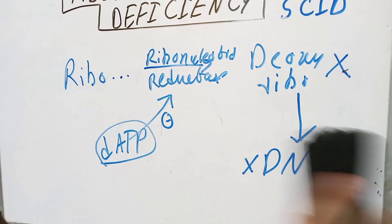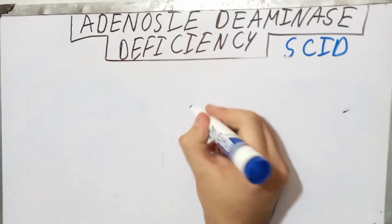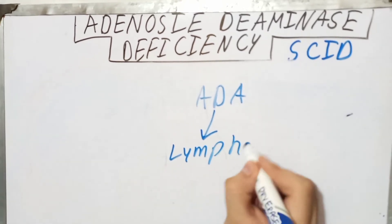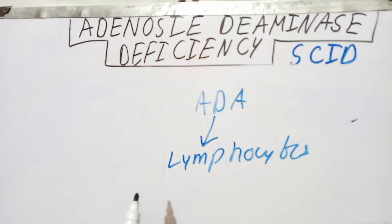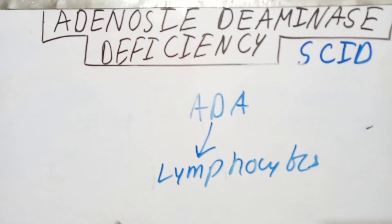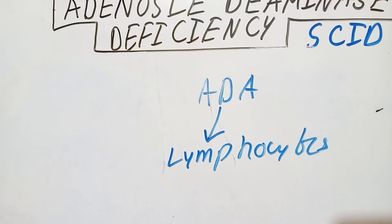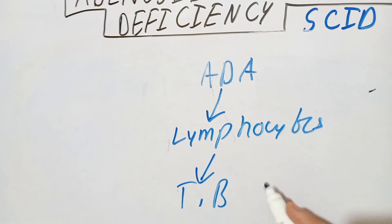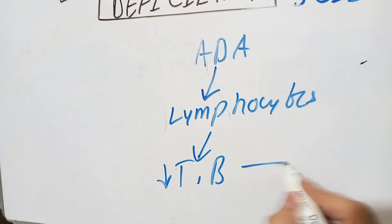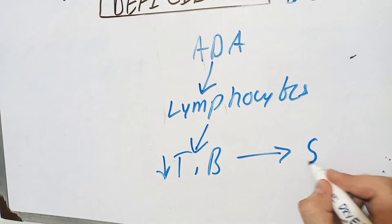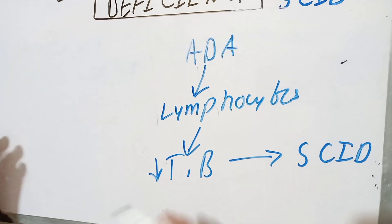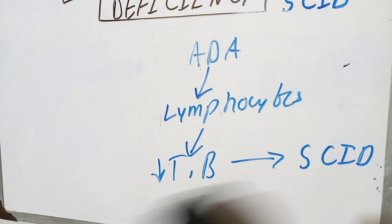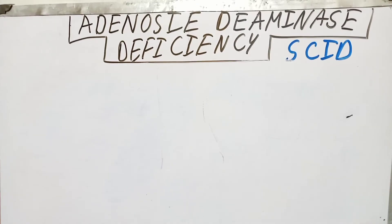The adenosine deaminase enzyme is very active in the cells of the immune system, especially in lymphocytes. When lymphocytes cannot divide and cannot work properly because DNA is not being formed, the patient develops immune deficiency. The T cell and B cell populations are decreased, leading to immune deficiency — hence the name severe combined immunodeficiency syndrome. The patient becomes vulnerable to many diseases that a normal person could overcome.